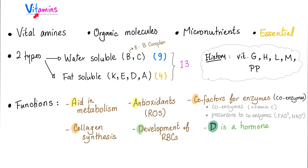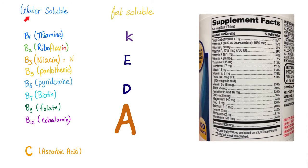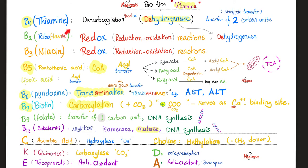Recall what we said about vitamins — why do you call them vitamins? It's a misnomer from 'vital amines,' even though mostly they are not amines. They are organic micronutrients that are essential, serving as coenzymes or precursors to coenzymes. They aid in metabolism, antioxidant activity, collagen synthesis like vitamin C, and red blood cell development. Vitamin D is also a hormone. We divide vitamins into water-soluble (B vitamins and vitamin C) and fat-soluble (vitamins K, E, D, A). Water-soluble vitamins are coenzymes; fat-soluble vitamins are mostly not.